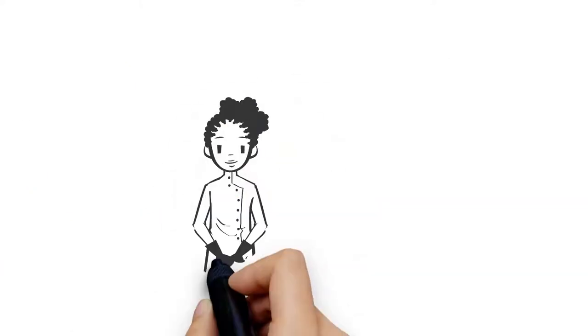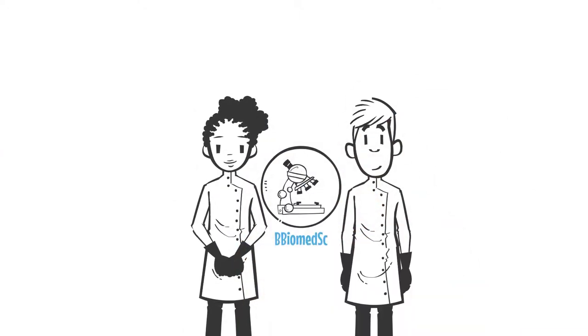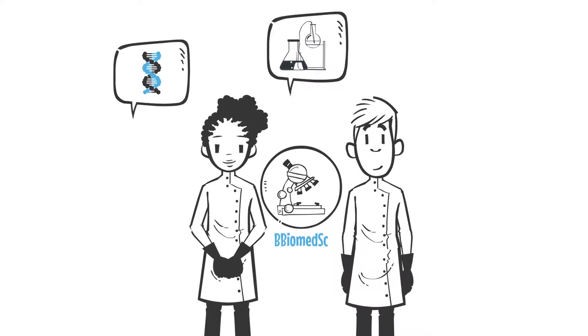If students wish, they can elect to take a minor on top of their major in Biomedical Sciences. Minor options include genetics and genomics, biotechnology and clinical research, and kinesiology.